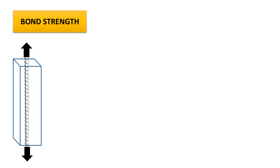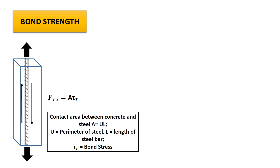What is bond strength? It is a force FTX, which is the maximum bond resistance to large slip and to splitting failure. The force FTX equals A times tau_T, where A is the contact area — a product of U and L. Here U is the perimeter of steel in contact with concrete, and L is the length of steel bars in contact with concrete. Tau_T is the bond stress between steel and concrete.